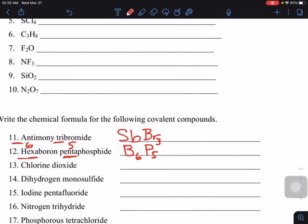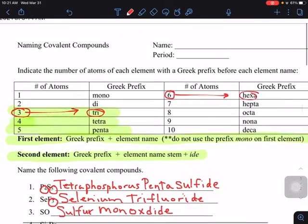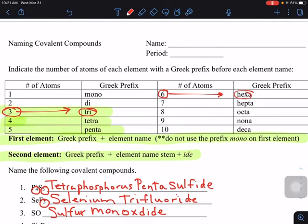And then the next one, chlorine dioxide. Chlorine is one we've seen quite a bit, that symbol is Cl. And then oxygen is the oxide, O for oxygen. Di is the prefix for two. We're just using this chart up here to tell us the number of atoms. The one we just did was two atoms, prefix di.